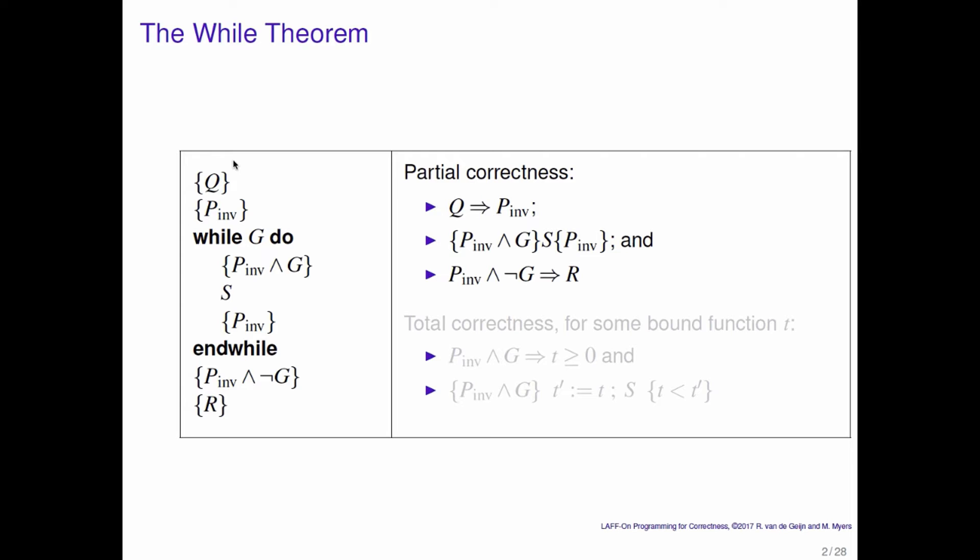In the previous unit we've already reasoned through how Q must imply the loop invariant, because you want the loop invariant to be true before the loop starts. That's the base case for our mathematical induction. Then we talked about how you should be able to reason that the loop invariant holding and G holding before statement S will again put you in a state where the loop invariant is true — that's the inductive step.